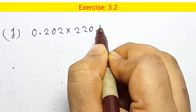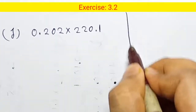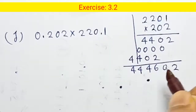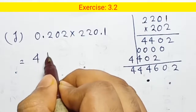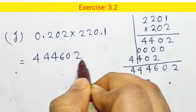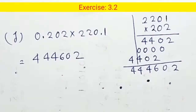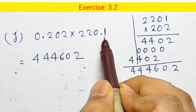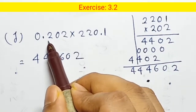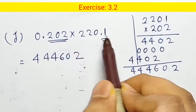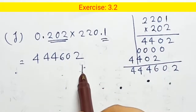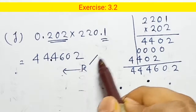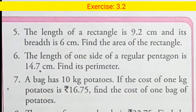Keep the numbers, drop the decimals for multiplication: product is 44444 — wait, 602. Now for the decimal point: one number has 3 decimal digits and the other has 1 digit, so 3 plus 1 equals 4. Count 4 digits from the right on the left side — one, two, three, four — and place the decimal point there.